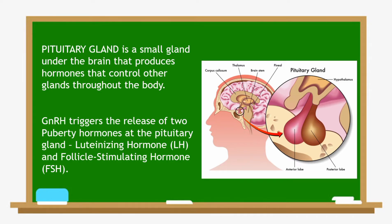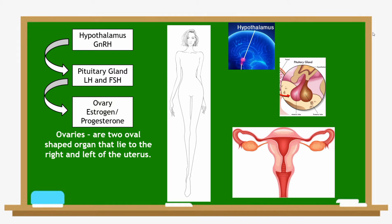The pituitary gland is a small gland under the brain that produces hormones to control other glands throughout the body. Gonadotropin-releasing hormone triggers the release of two puberty hormones at the pituitary gland: the luteinizing hormone and the follicle-stimulating hormone. In females, these hormones will trigger the release of estrogen and progesterone in the ovaries.